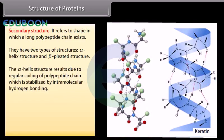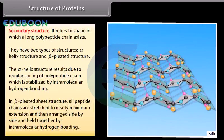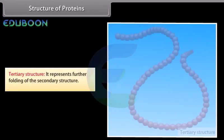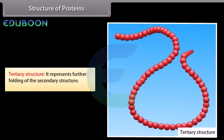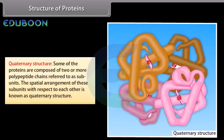The alpha helix structure results due to regular coiling of the polypeptide chain, which is stabilized by intramolecular hydrogen bonding, for example, keratin. In beta pleated sheet structure, all peptide chains are stretched to nearly maximum extension, arranged side by side and held together by intermolecular hydrogen bonding, for example, silk. Tertiary structure represents further folding of the secondary structure. Quaternary structure: some proteins are composed of two or more polypeptide chains, referred to as subunits. The spatial arrangement of these subunits with respect to each other is known as quaternary structure.